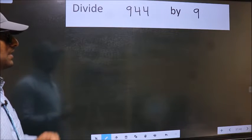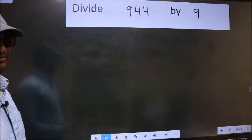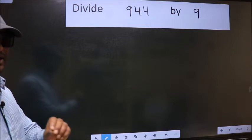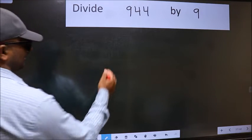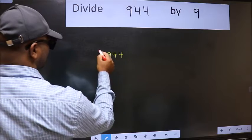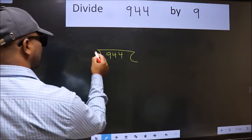Divide 944 by 9. To do this division, we should frame it in this way: 944 here and 9 here.